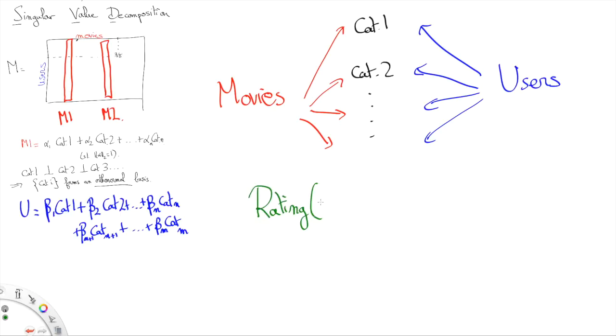And crucially, given the decomposition of a movie and a user, we can estimate the rating of the user of the movie by some sort of scalar product U transpose M, which is obtained by multiplying the corresponding coefficients alpha 1, beta 1, alpha 2, beta 2,